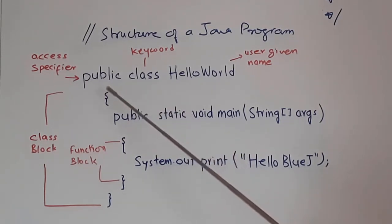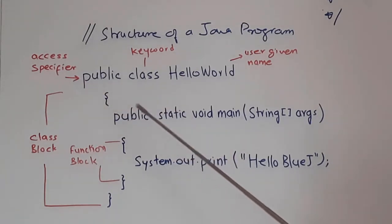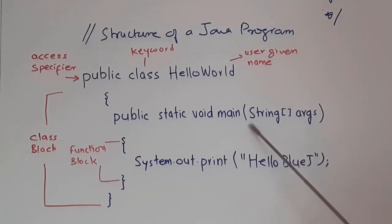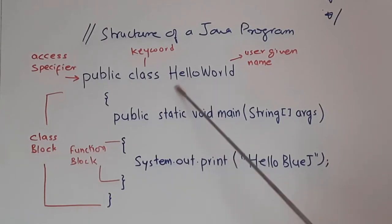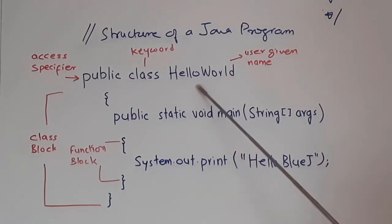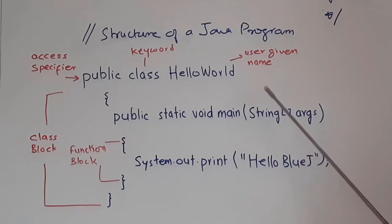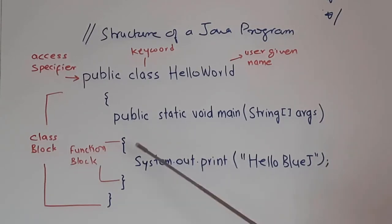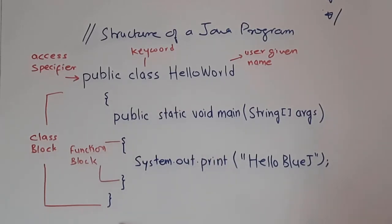If you look at all these different keywords and access specifiers, there are only two words that start with a capital letter: String starts with a capital S, and System also starts with a capital S. All others are in small letters except the user-given name. After an executable statement, there is a semicolon. There is no semicolon on the class or function declaration lines — only inside a function block for executable statements.